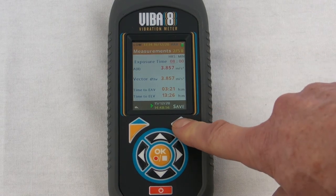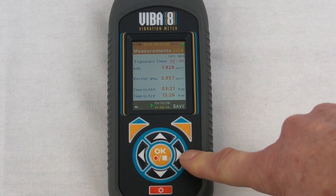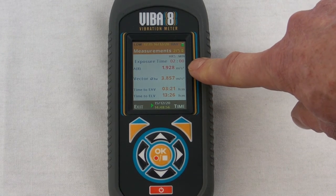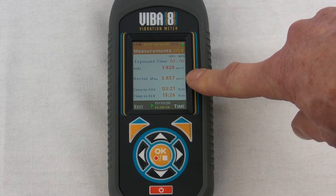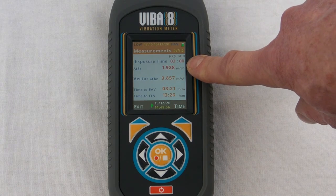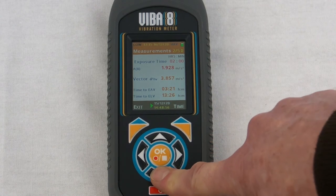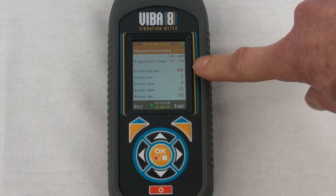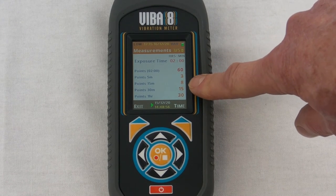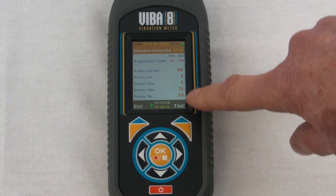We can change the time so we could change that to maybe say that that person was working on there for two hours and see what that does. For two hours, the daily a8 exposure figure will be 1.92 or 2 meters per second squared. Press down key again and you can see we get the points. So the points for two hours is 60, for five minutes you'd be three points, 15 minutes eight points, 30 minutes 15 points and one hour would be 30 points. So you can use this for management afterwards to show people how many points they would be exposed to in a given amount of time.